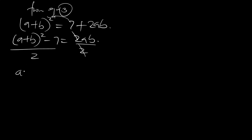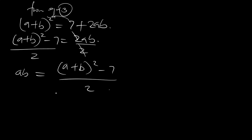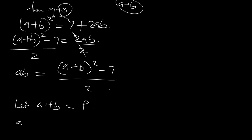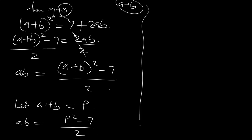So we have ab equal to a plus b squared minus 7, all over 2. We are looking for a plus b, so let a plus b be equal to p. Substituting, ab equals p squared minus 7 all over 2. Let's call this equation 5.